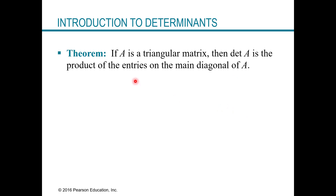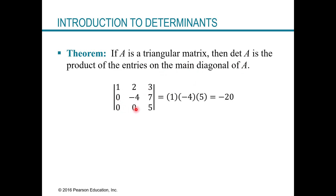One last theorem: if a matrix is a triangular matrix — meaning you have zeros in the bottom left corner forming a triangle, like after row reducing to get zeros under the pivots — then the determinant is simply the product of the entries on the main diagonal. For example, one times negative four times five gives you the determinant directly. This is a very fast method for finding the determinant of a large matrix once it's in triangular form.